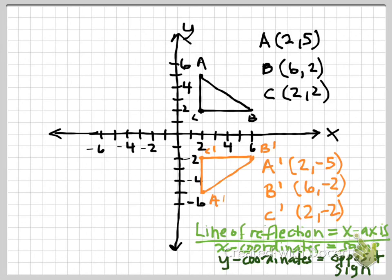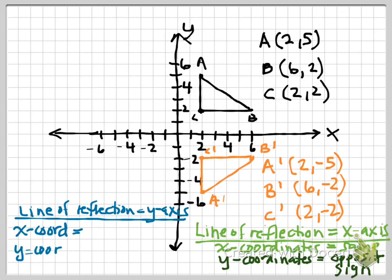So let's make a prediction. What if the line of reflection is the Y axis? What do you predict will happen with the X coordinate and what do you predict will be happening with the Y coordinates? The X coordinates are going to change from positive to negative and the Y coordinates are going to stay same. So X coordinates will have opposite signs. And the Y coordinate would be the same.